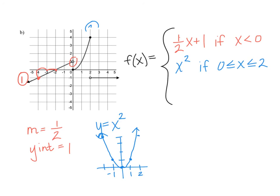The third piece is a horizontal line — specifically y equals negative 1. Since y is already represented by f of x, we just write negative 1. The domain starts at x equals 2 and goes forever to the right, so this is if x is greater than 2. We use strict greater than because there is an open dot at x equals 2 for that graph.